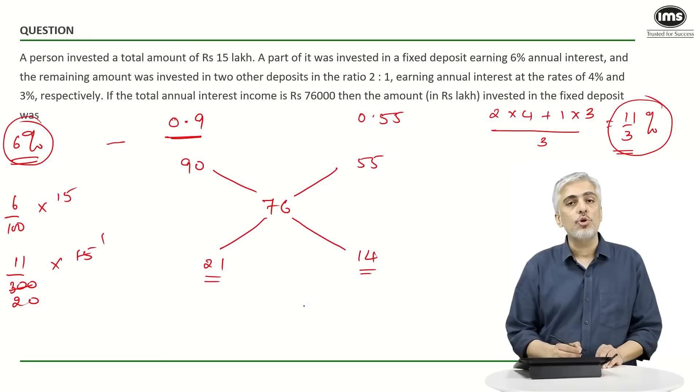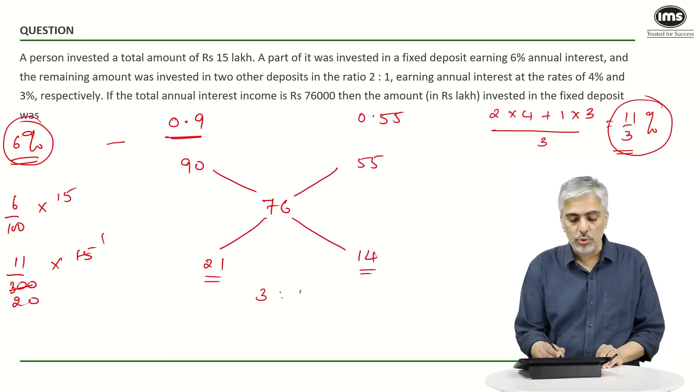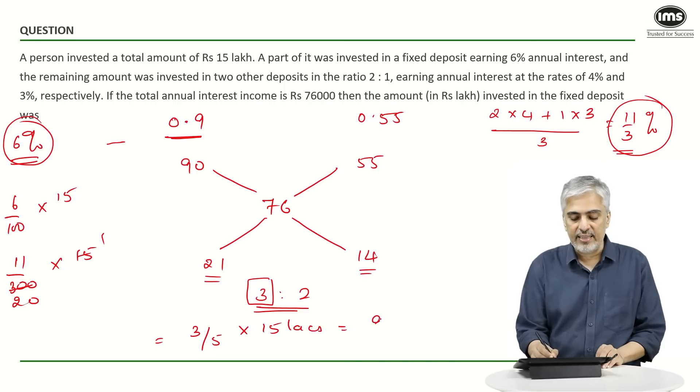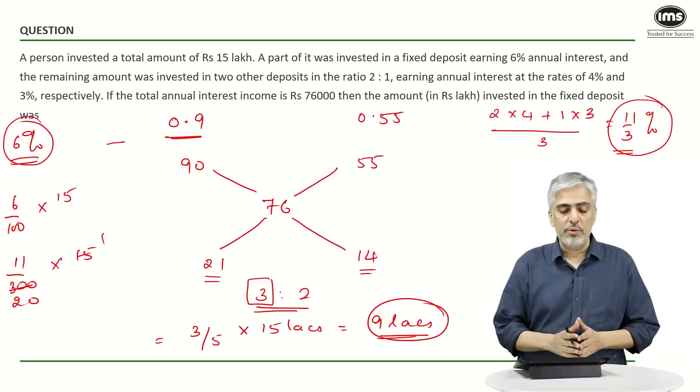Using alligation, I get 14,000 over here. 76 minus 55 becomes 21,000. So the amount I know has to be in this ratio. This ratio can be reduced to 3:2. I want to find the first part, so the amount invested at 6% will become 3/5 of 15 lakhs, and the answer will be 9 lakhs. Pretty straightforward method.